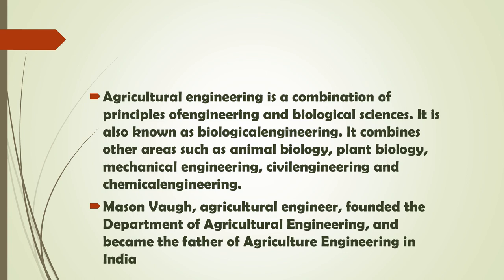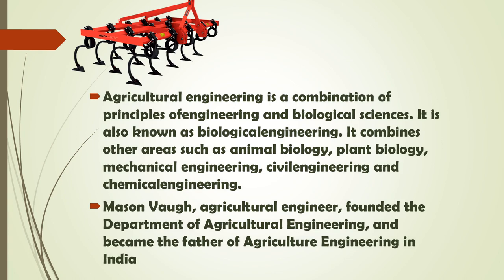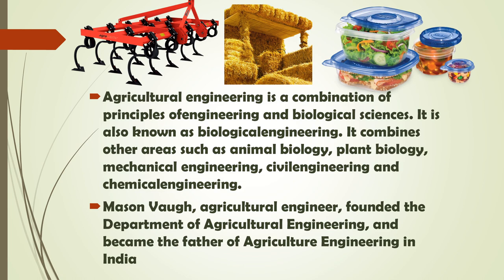Agricultural engineering is a combined form — it uses principles of mechanical, civil, electrical, food science, and chemical engineering along with knowledge of agricultural principles. With the help of technology and engineering, we increase the productivity and quality of crops, such as through design of farm machinery and storage of grains and food products.